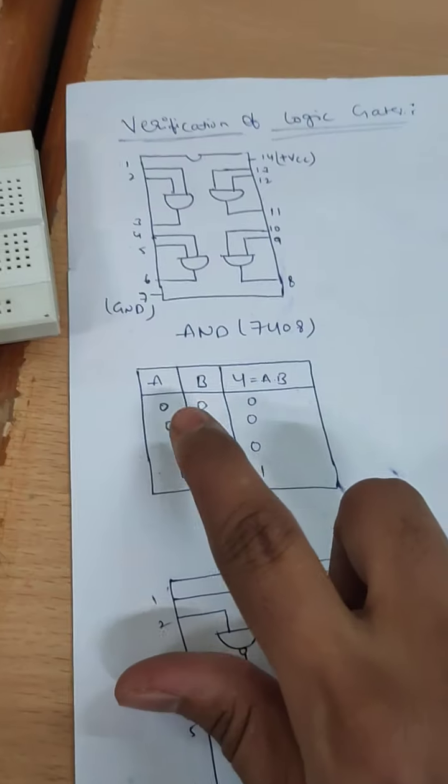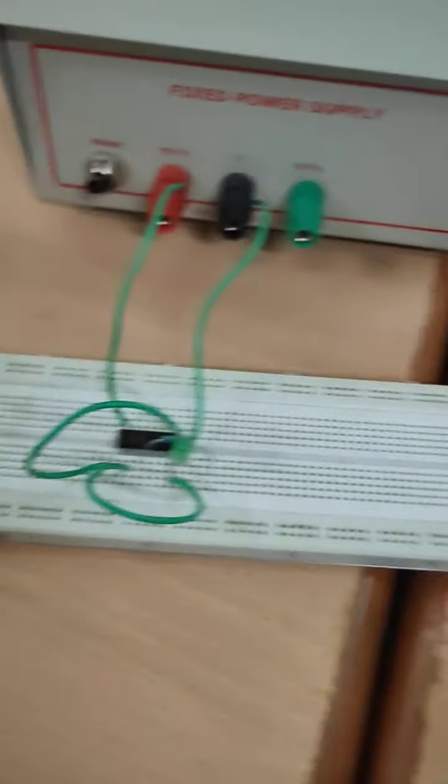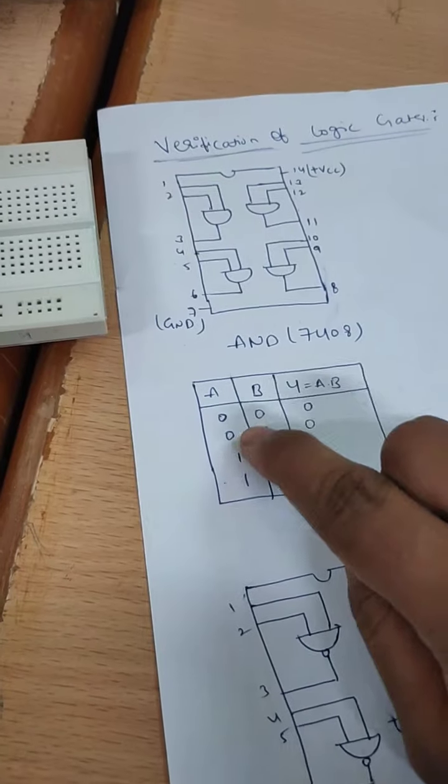What is the condition? What is the truth table for AND gate? 0, 0, the output will be 0. So, the output will be 0. For example, I am applying 0, 1.